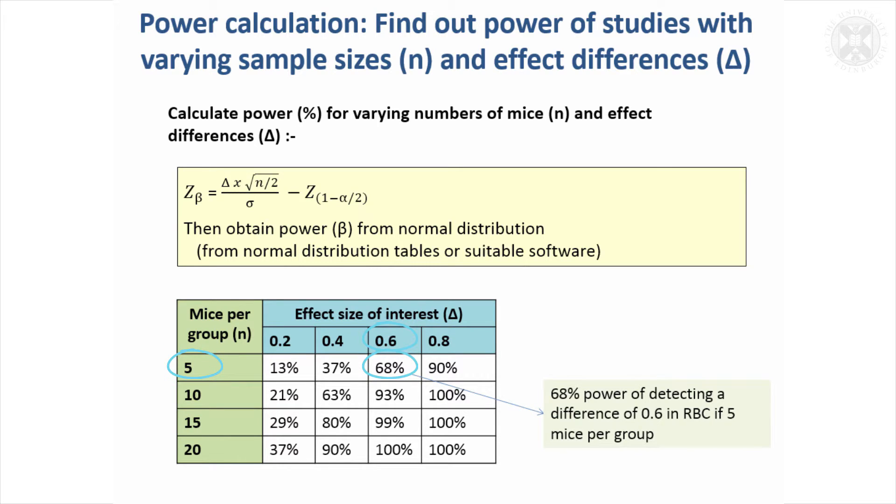If you've only got five mice per group, the power of the study would be just 68 percent, so you'd have a 68 percent chance of getting your results significant and a 32 percent chance that it wouldn't be significant. But that quickly increases with the number of mice, and by the time you've got 10 mice, it's quite an acceptable power.